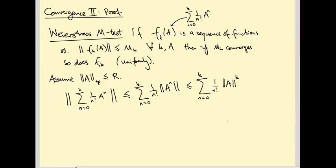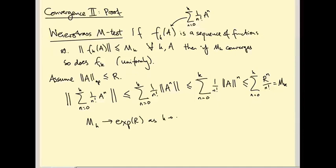We proved a lemma in the last video that the norm of A^N is bounded above by the norm of A to the N. So we can replace this by the sum from N=0 to K of (1/N!) times the norm of A to the N. Since the operator norm of A is bounded by R, this is at most the sum from N=0 to K of R^N / N!, which we call M_k. This M_k converges to exp(R) as K goes to infinity.